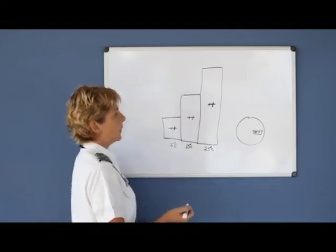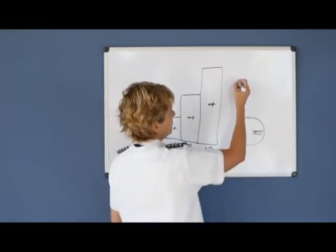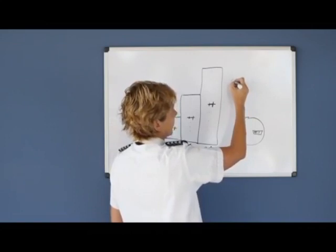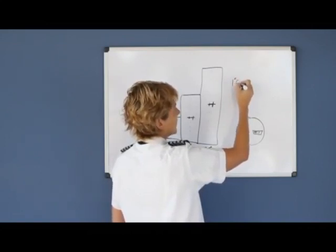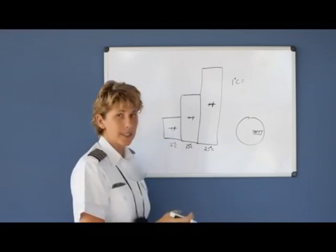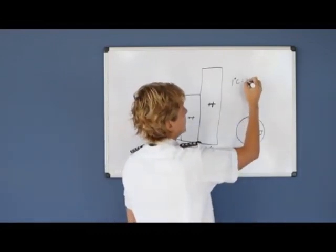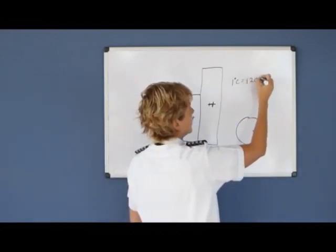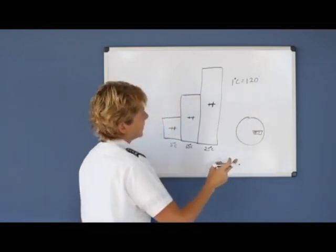Now if you wanted to calculate this out, just a rule of thumb would be that for each degree Celsius different than standard, your altitude changes about 120 feet. So let's take an example.